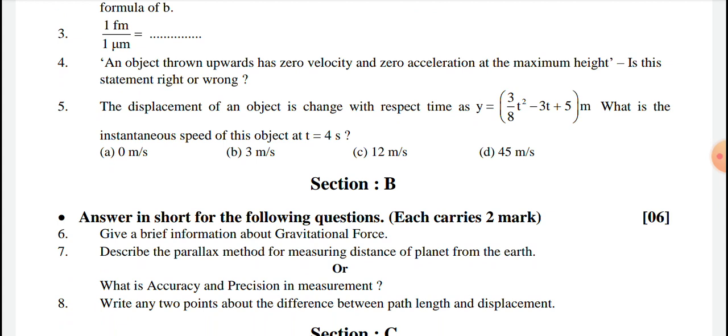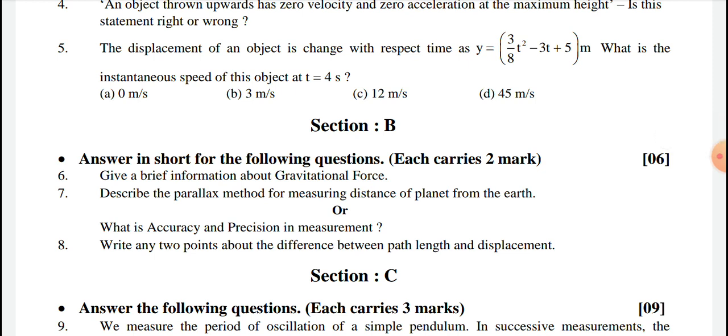Now Section B, answer in short for the following questions. Give a brief information about gravitational force. Describe the parallax method of measuring distance of planet from the earth. What is accuracy and precision in measurement?